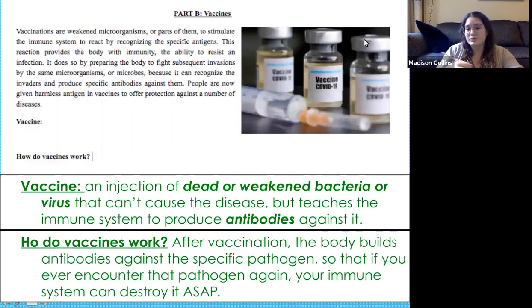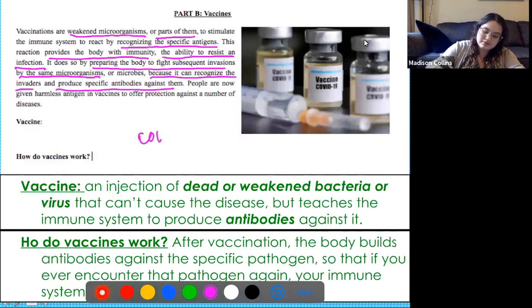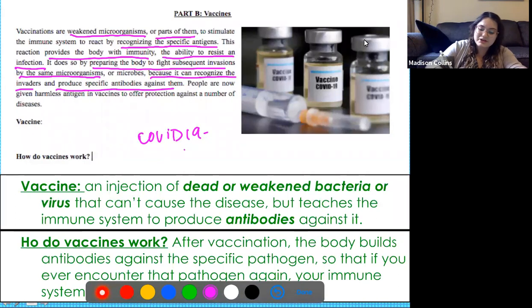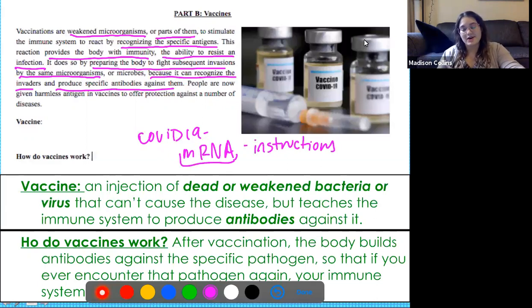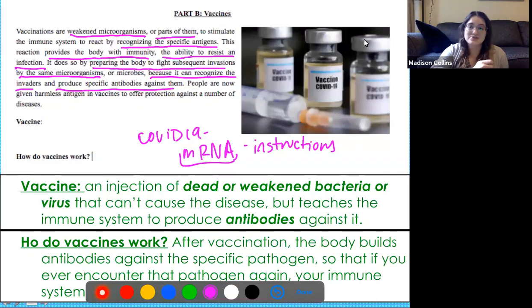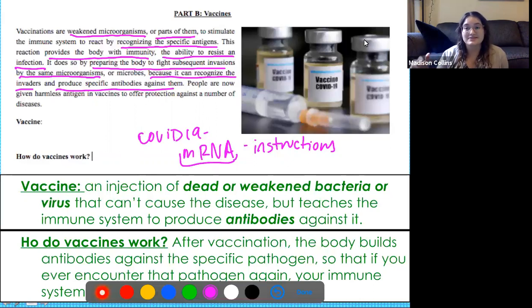The COVID-19 vaccine is actually a little bit different, and we're going to talk about this more tomorrow. The COVID-19 vaccine actually contains no viral particles - it does not contain the COVID-19 virus. It's what we call an mRNA vaccine, which is actually some pretty new technology that has just been approved. It contains the instructions needed to protect your body from this disease. All we need to know is it does not contain any sort of dead or weakened virus - it's something new.